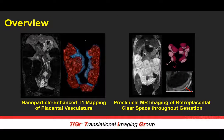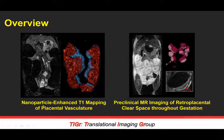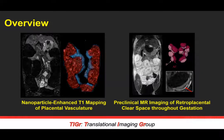As a quick roadmap for today's talk, there are two primary placental applications. The first is T1 mapping of placental vasculature using this novel nanoparticle agent. The second topic will be preclinical imaging of the retroplacental clear space throughout gestation — the junctional zone between the placenta and the myometrial wall — which is extremely important for diagnosing placental accreta or invasive placentation.